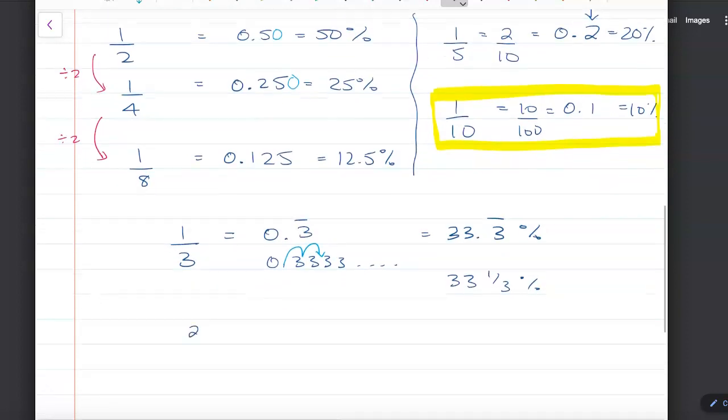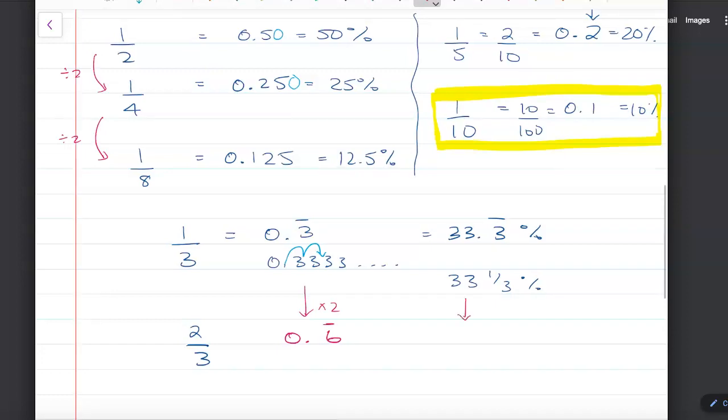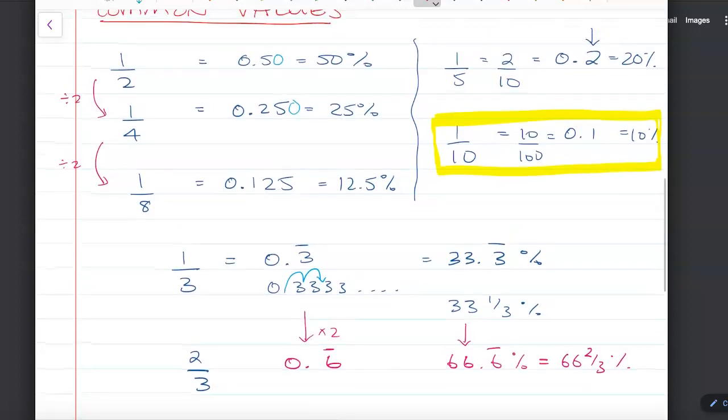Which means that two thirds is just double this decimal, so it's 0.6 recurring, and double the percentage—66.6 recurring or 66 and two thirds percent. These are really key common values to be able to efficiently recall. If we know these, we can simply calculate anything.